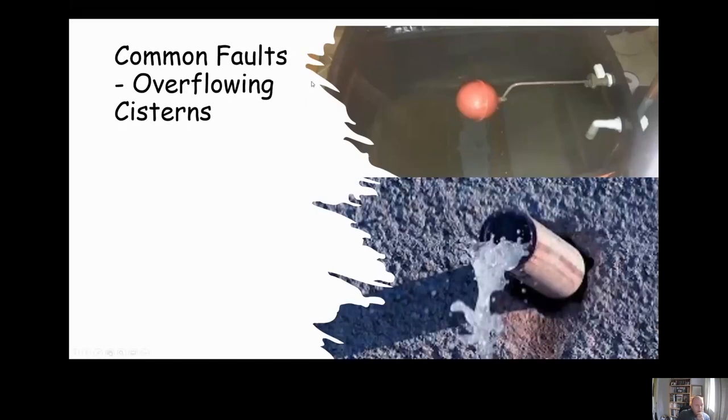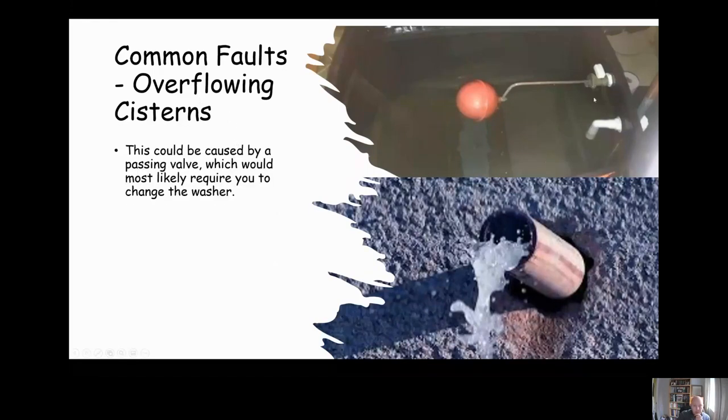Some other faults could be overflowing cisterns. If the float valve is broken, for example, it could cause the water to consistently flow into the cistern, which can then cause it to overflow. If you see the cistern is overflowing, there's a reasonable chance it will be as a result of float valve failure. You could either replace the float valve or just identify the fault, for example replace the washer, and fix it.